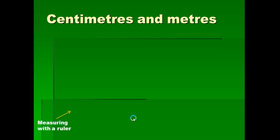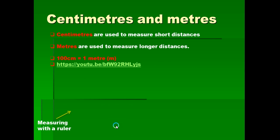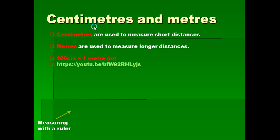Our first topic is centimeters and meters. When we talk about centimeters and meters, it is about measurement — what you can use to measure. Centimeters are used to measure short distances, while meters are used to measure longer distances. 100 centimeters equals 1 meter — that is the standard unit of measure. Here is a YouTube link where you can look at centimeters and meters.